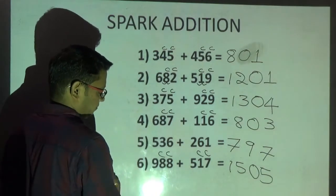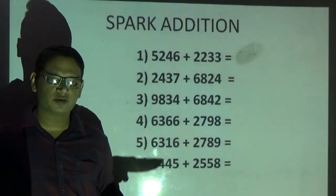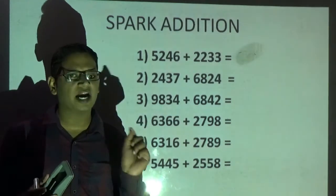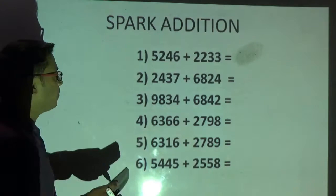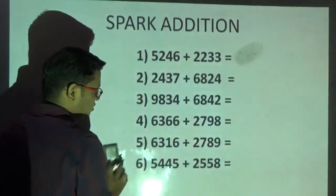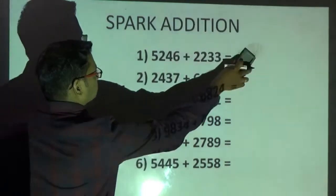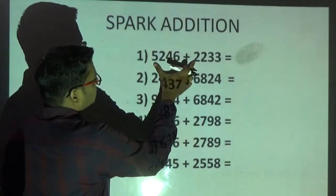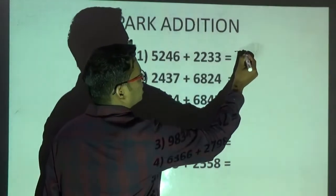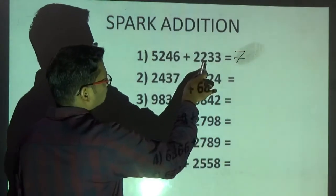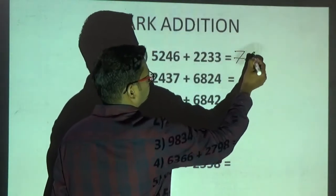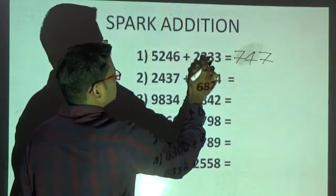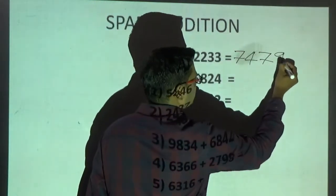Hello everyone, welcome back to Part 3 of our Spark addition. Before going for Part 3, kindly go through Part 1 and Part 2. In Part 3 we shall solve 4-digit additions using Spark addition — that is Vilokanam, through observation. Observe: 5 plus 2 is 7 — next two digits not generating carry, write 7. 2 plus 2 is 4 — next two digits not generating carry, write 4. 4 plus 3 is 7 — next two digits not generating carry, write 7.